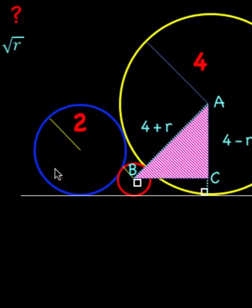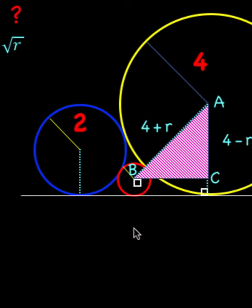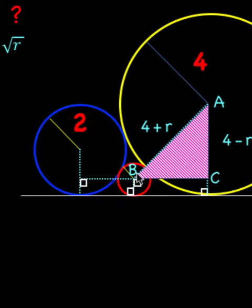Next, let's consider the blue circle and the red circle, performing the same process as we did with the yellow and red circle. Let's drop the perpendicular segment which is the radius of the blue circle — the angle here is a right angle — and let's do the same with the red circle. Then from the center of the red circle, let's draw a line segment perpendicular to this radius of the blue circle. The angle here is a right angle, so we also have a rectangle here. Then let's connect the centers of the blue and red circles and label the points. Let's consider this right triangle DEB.